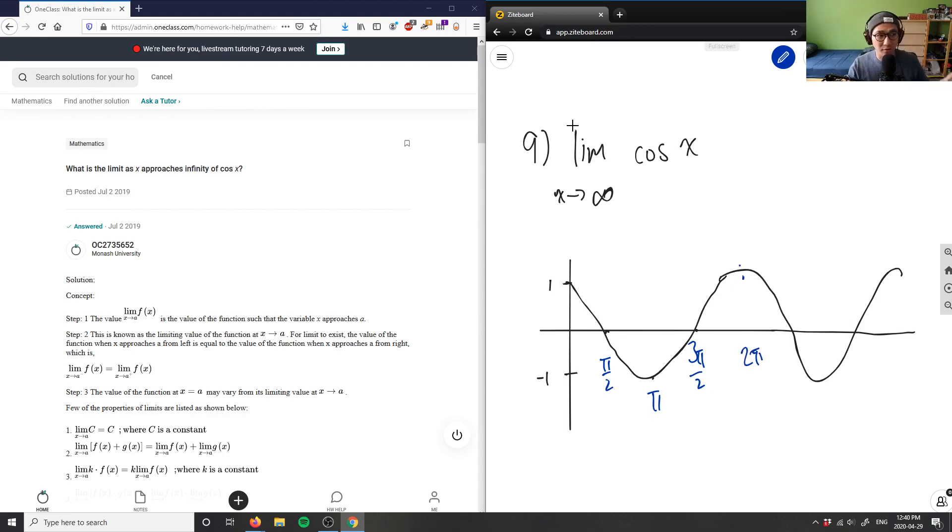So as x approaches infinity, what is the limit as x approaches infinity here? So if I can visualize this graphically, as x approaches infinity, as we go towards infinity here, does cosine actually approach a specific value? In this case, it does not.